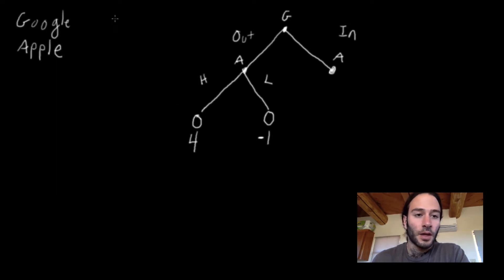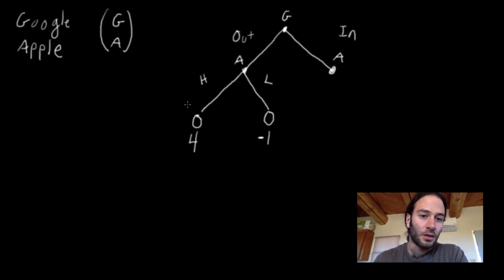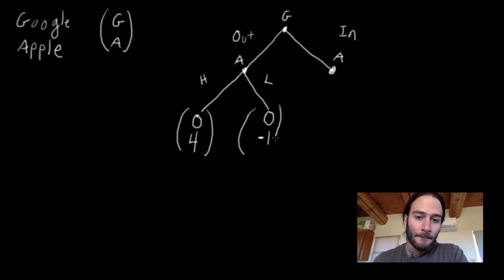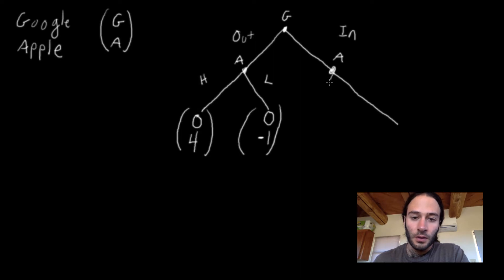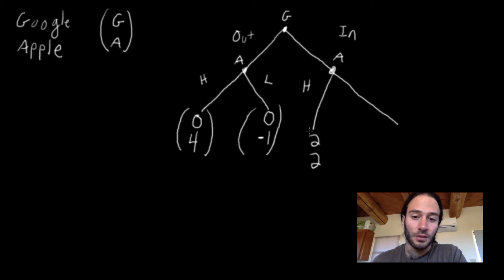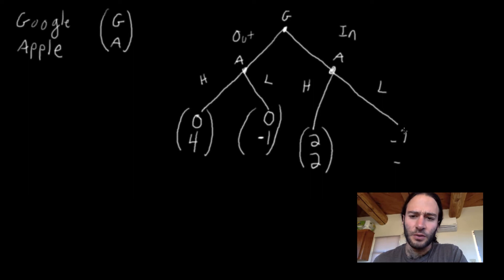Google is always the top payoff and Apple is always the second one, listed in parentheses. If Google chooses to enter the market, Apple still makes the same pricing decision but the payoffs are different. If Apple chooses a high price, it only gets two because it splits the market with Google, so both get two. However, if Apple chooses a low price, it's essentially entering a price war with Google and they'll both get negative two.